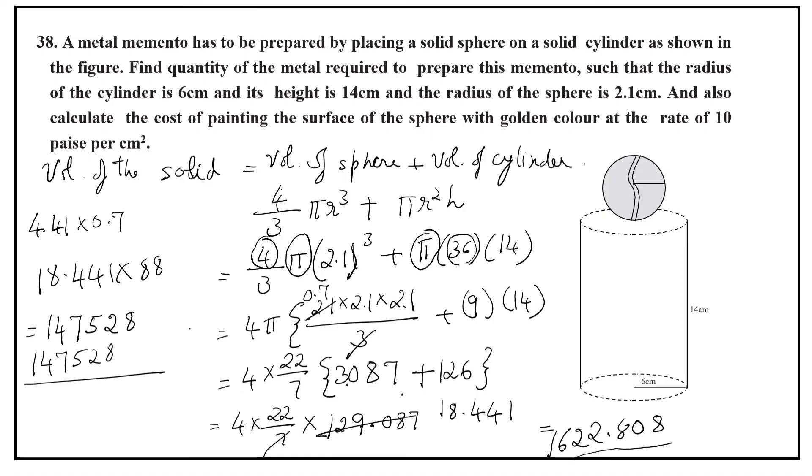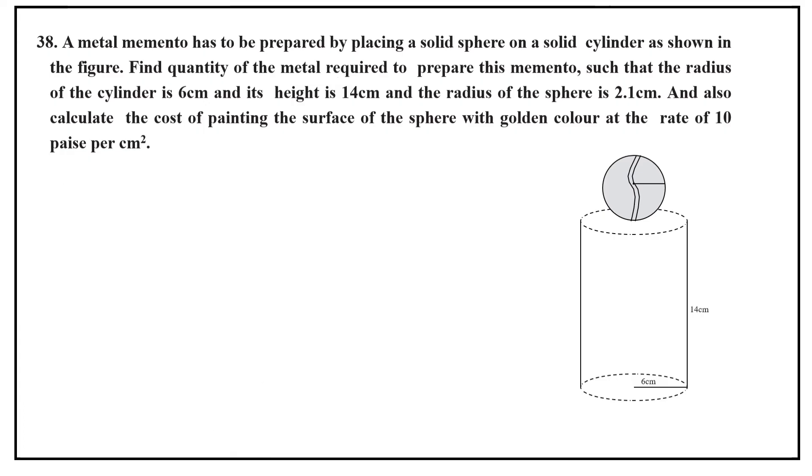What is that? Centimeter cube. So total volume of the metal required is 1,622.808 cm³. Let us go to the next task, that is calculating the cost of painting the sphere.